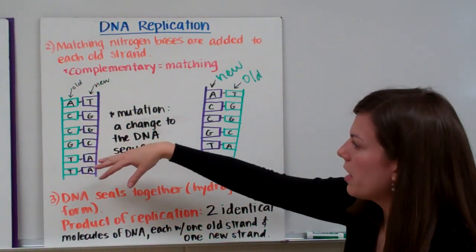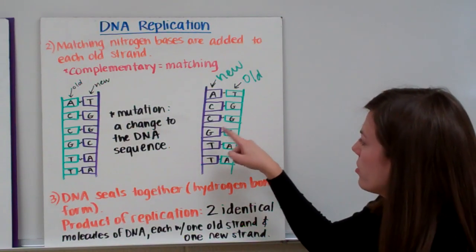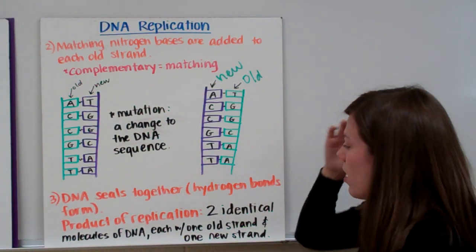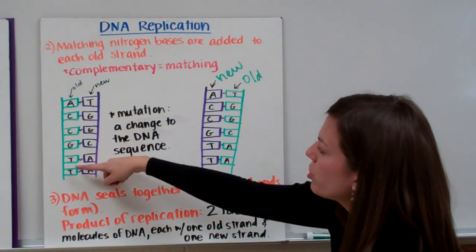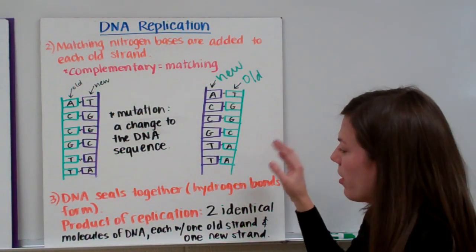We have one molecule of DNA here, and one molecule of DNA here, and they're identical. If you look at the letters, or the nitrogen bases, they're exactly the same. But they both have one old strand and one new strand. So you see old and new, and new and old, but they are identical.